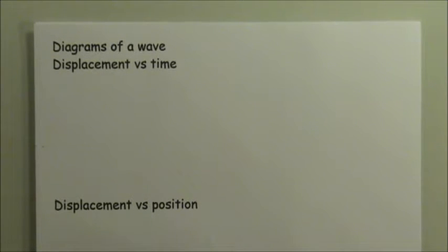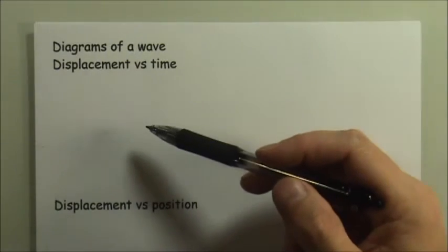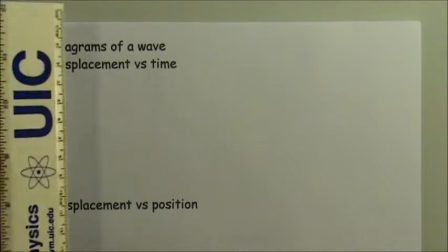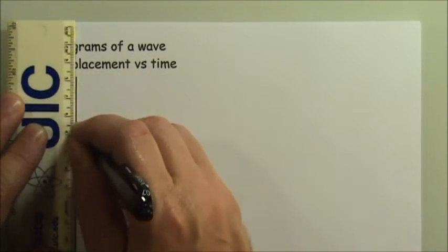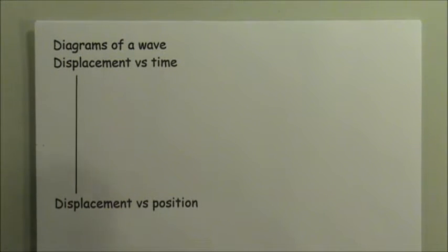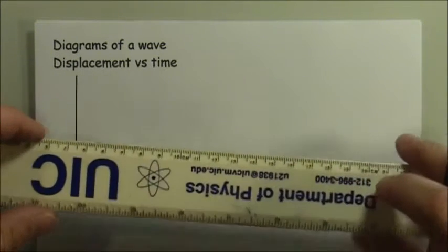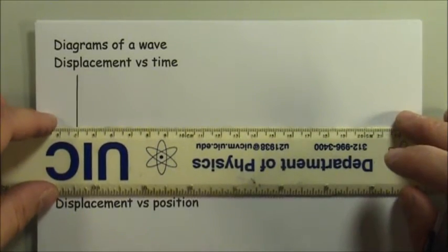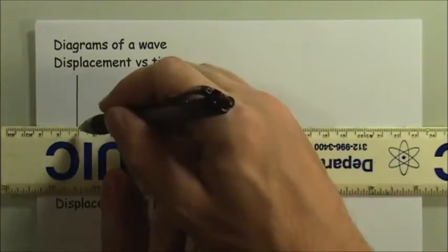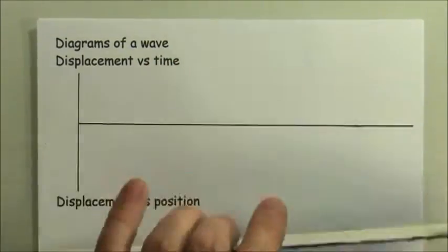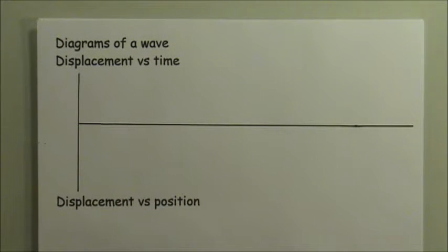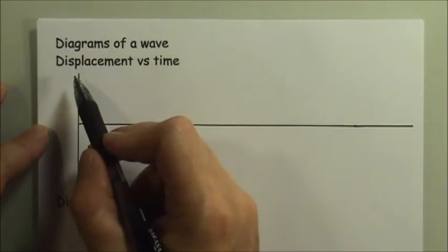Now we're going to look at some of the graphical representations of waves. In the previous section on simple harmonic motion we looked at one particular graph — the displacement versus time graph. We're going to revisit that one briefly. When you look at the displacement versus time graph, you are not so much looking at the wave motion; what you're looking at is more one particular part of the medium, watching that one particular part oscillate.